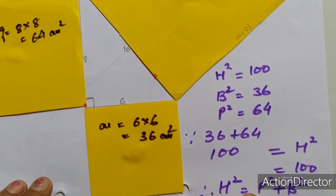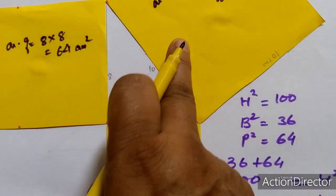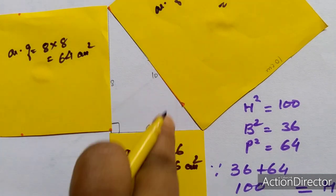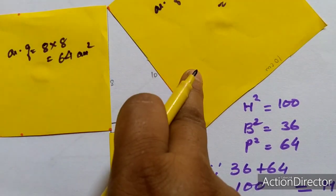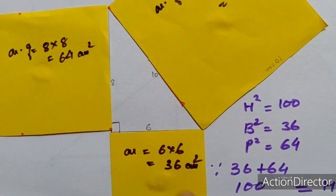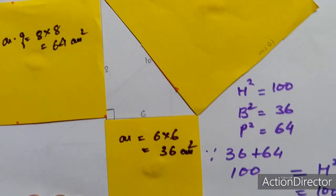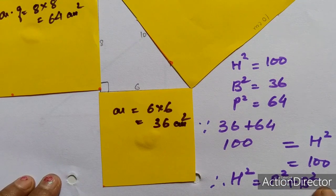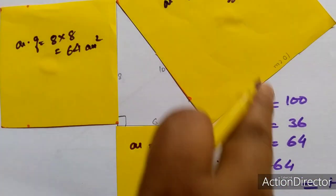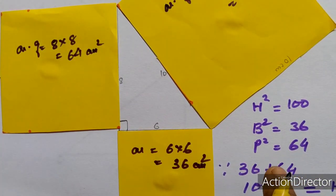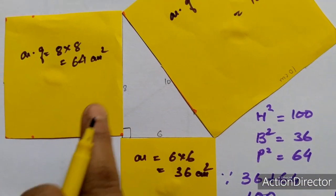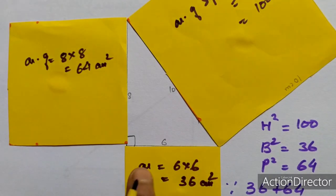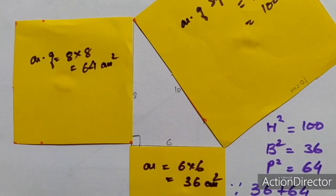In this manner, by cutting and pasting method, you can say that always hypotenuse square is equal to perpendicular square plus base square. And this way you can verify with other dimensions also. Thank you.